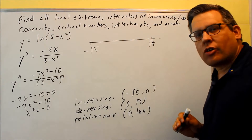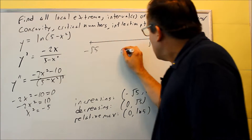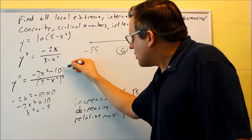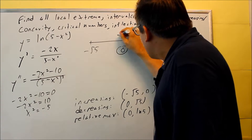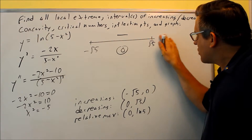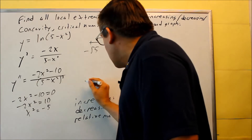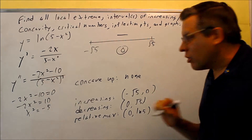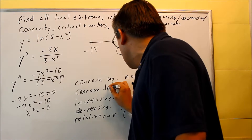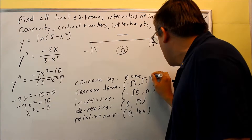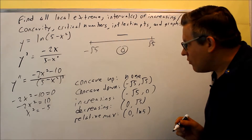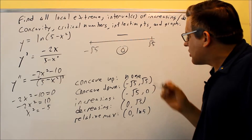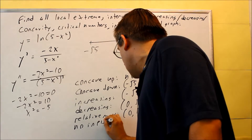So our number line only has negative root 5 and root 5 as endpoints. We pick x = 0 as a test number. Plugging into the second derivative gives negative 10 on top and a positive on the bottom, which is negative overall. Therefore, the function is concave down on the entire interval (negative root 5, root 5). There are no inflection points since there's no change in concavity.